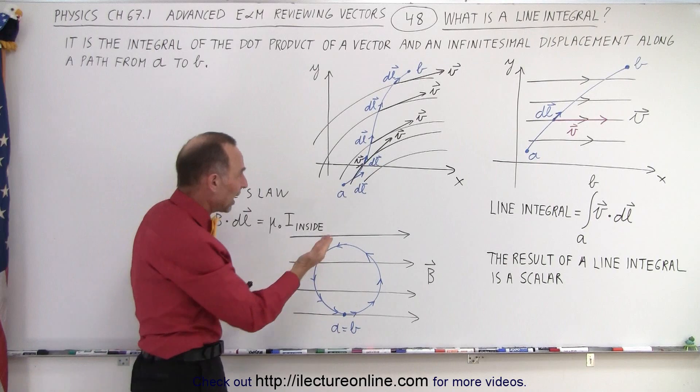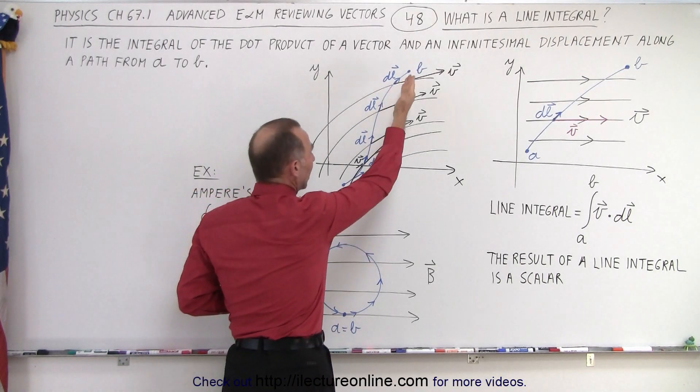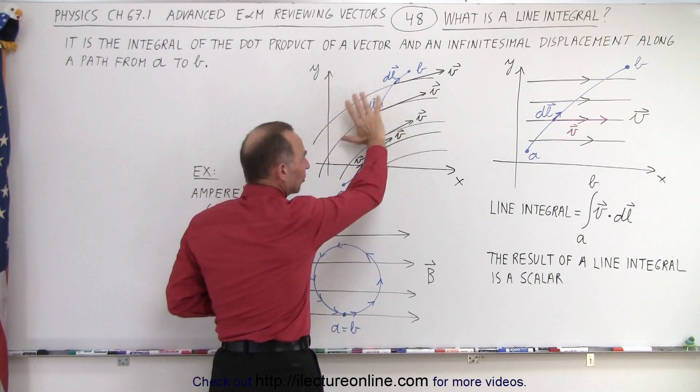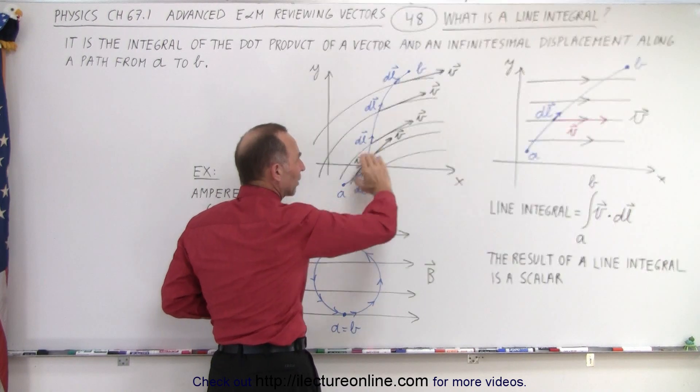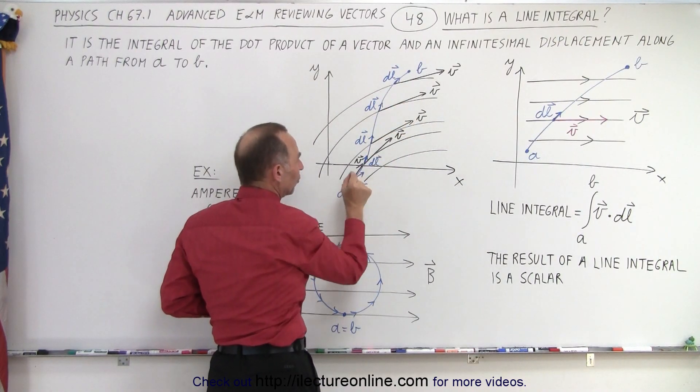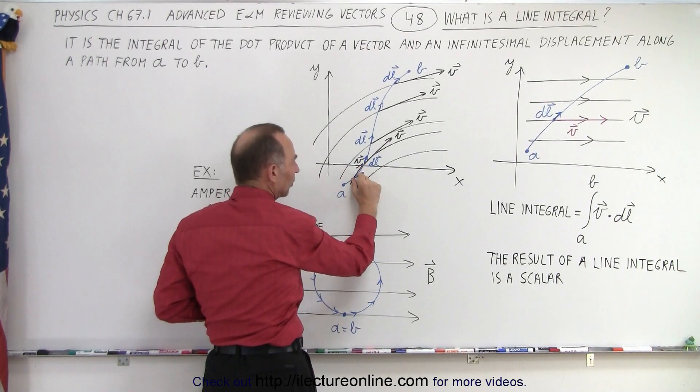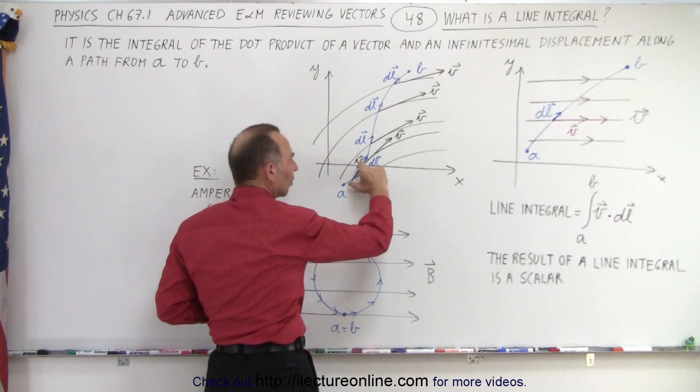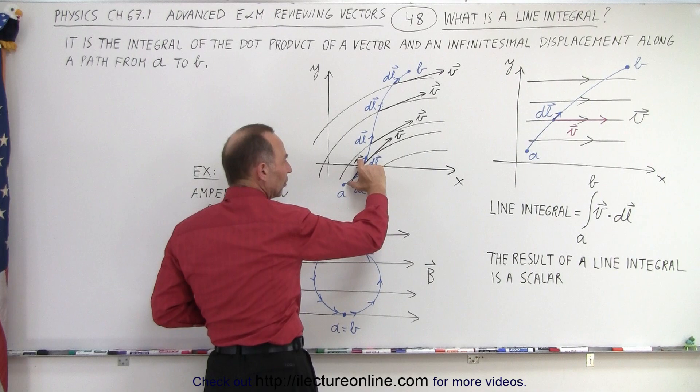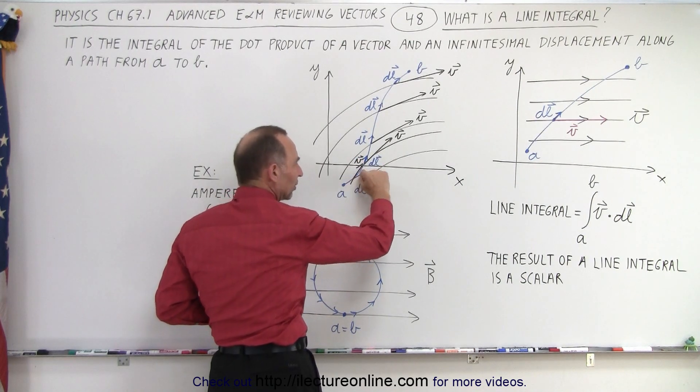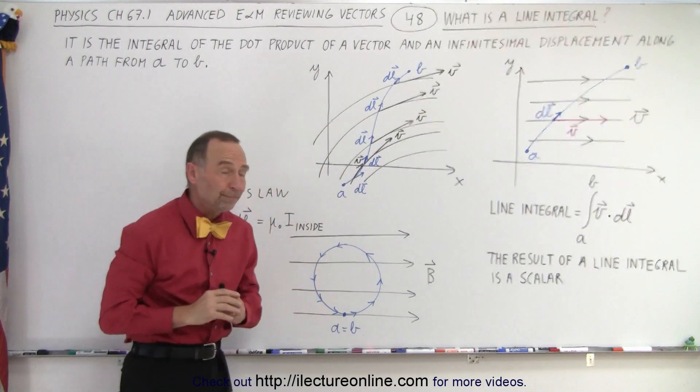So here we have kind of an illustration of that. You have kind of a path, doesn't matter what the path is, you have a vector field, you have a magnitude and direction along the way that changes. And so each time you multiply the directional distance that you travel dL times the strength, the magnitude of the vector field and the direction of the vector field, you just do that all the way along the path and sum them all up.